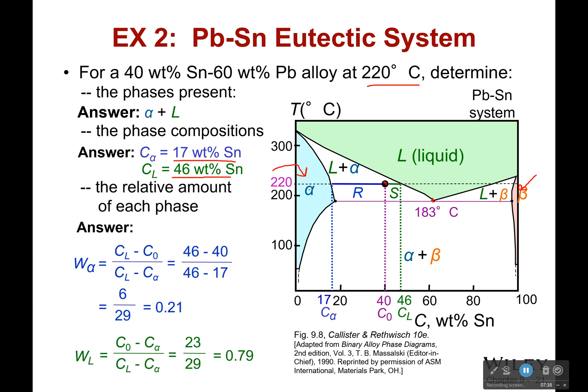If I want to find the weight fraction, I first find the total distance between these two points. So that would be 46 minus 17, that's what you see right here, which comes out to be 29. And then I find the distance to the opposite side. So I am trying to find the weight fraction of liquid, I find the distance to the alpha. So that would be 40 minus 17. So that's what I get right here, that's 23. And for the alpha side, I find the distance to the liquid point. So that would be 46 minus 40, which is right here. And so as you can see, I am closer to liquid, and so I have a greater weight fraction of liquid.